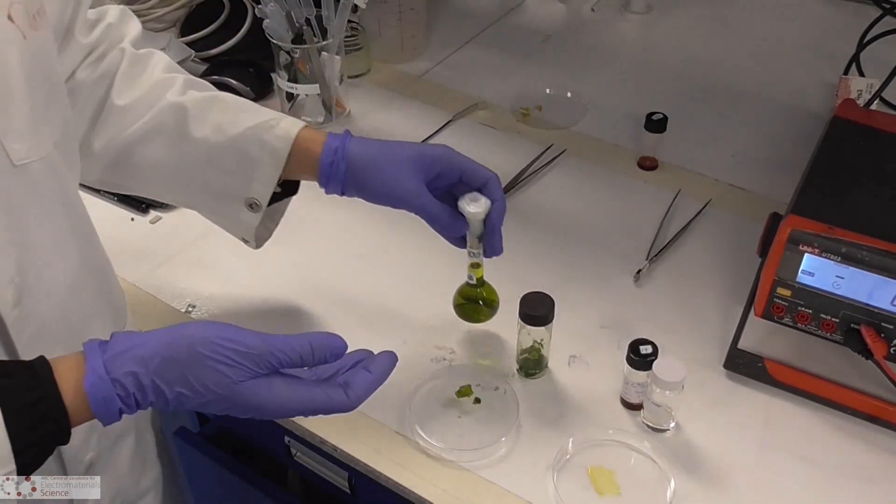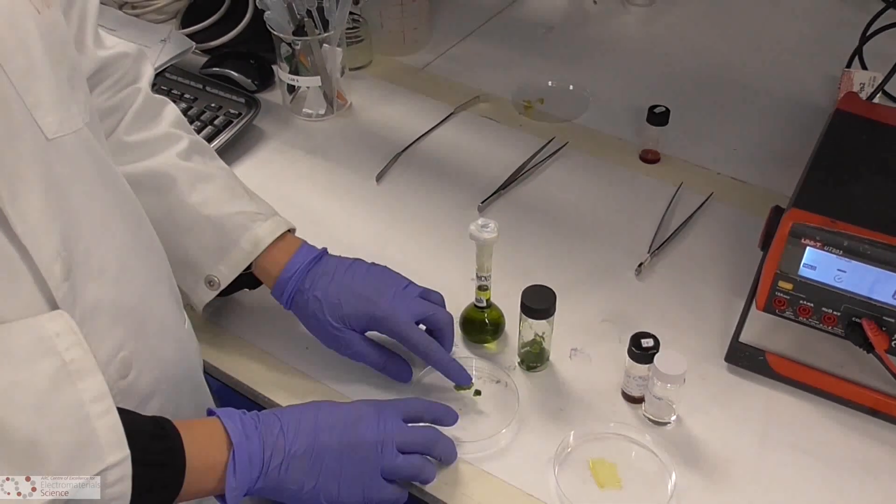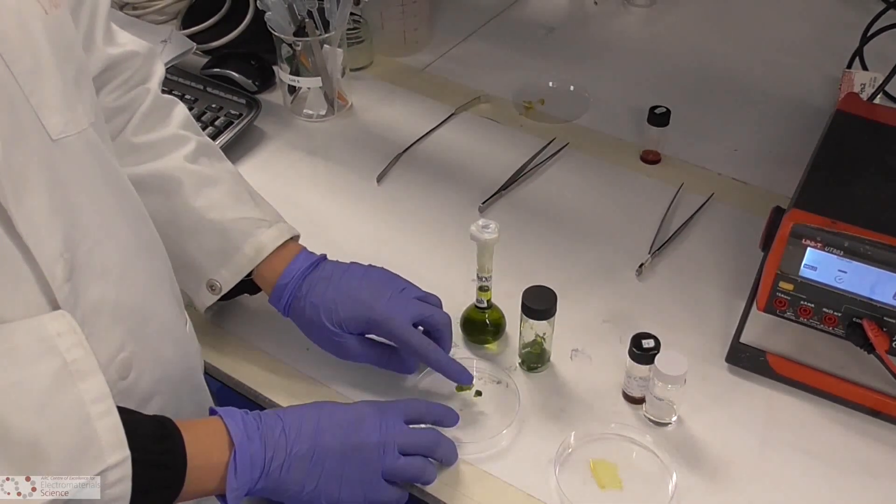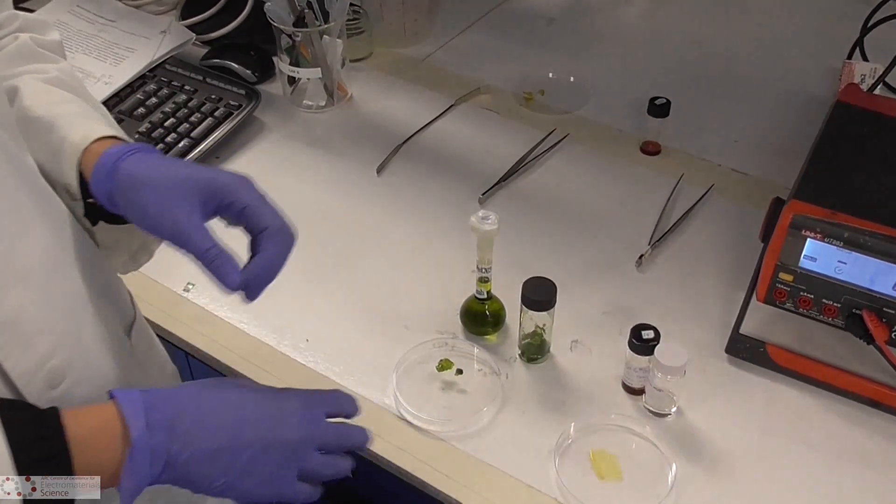What we do in this group is use polymers to make a gel from this electrolyte. You can see the gel is quite flexible. We can use this to make flexible devices down the line.